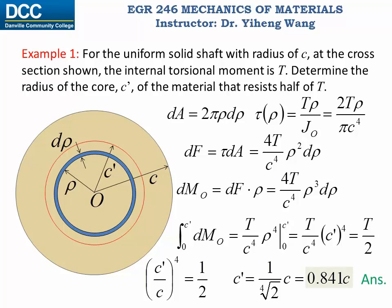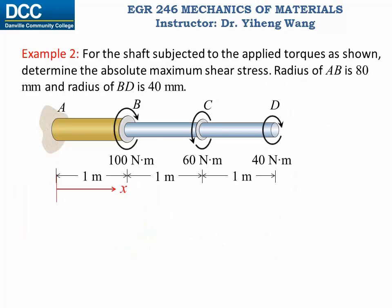Now look at this answer and consider the implication: do we always need to use a solid shaft to resist torsion? For a composite shaft subjected to multiple external torques, we need to determine the absolute maximum shear stress developed inside the shaft. When using the torsion formula, T is always the internal torsional moment, which is a function of position — so that's the first thing we need to determine.